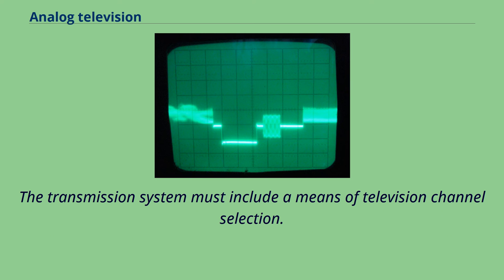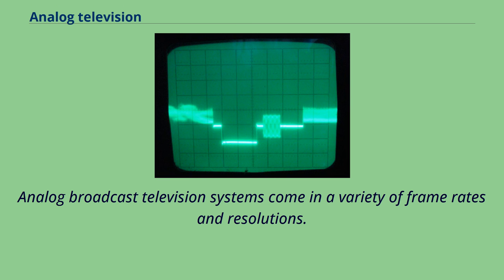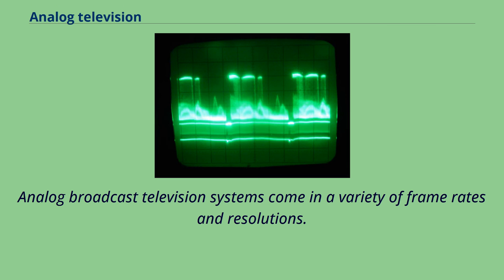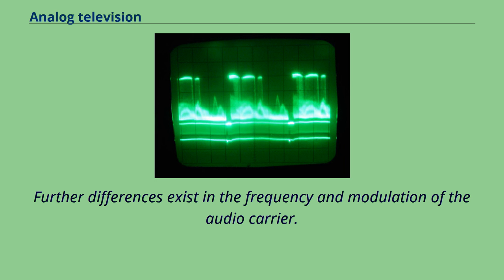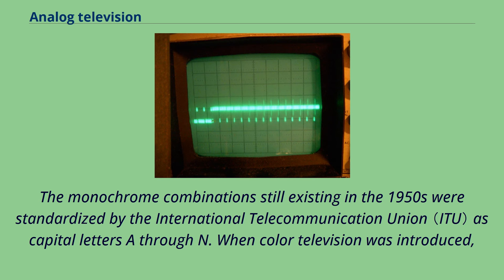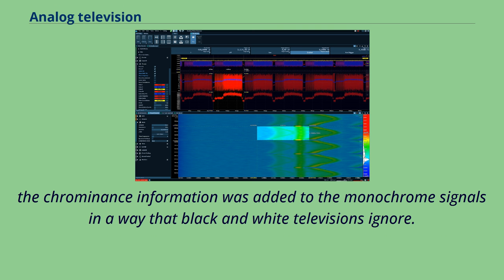Analog broadcast television systems come in a variety of frame rates and resolutions. When color television was introduced, the chrominance information was added to the monochrome signals in a way that black and white televisions ignore. In this way backward compatibility was achieved.